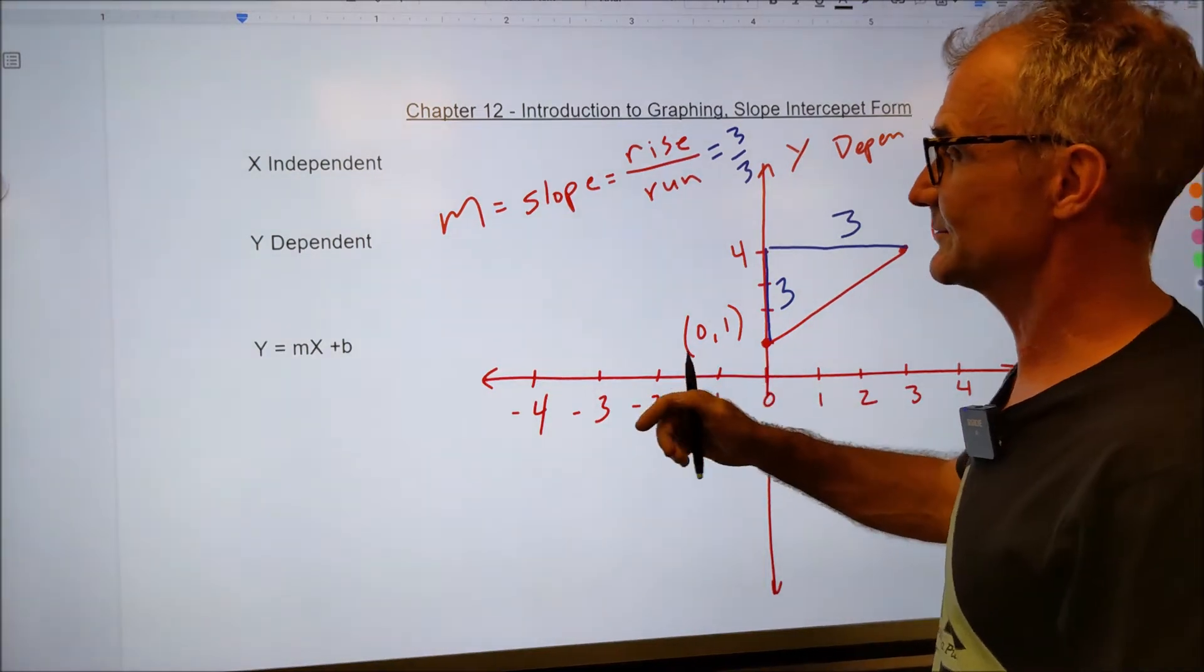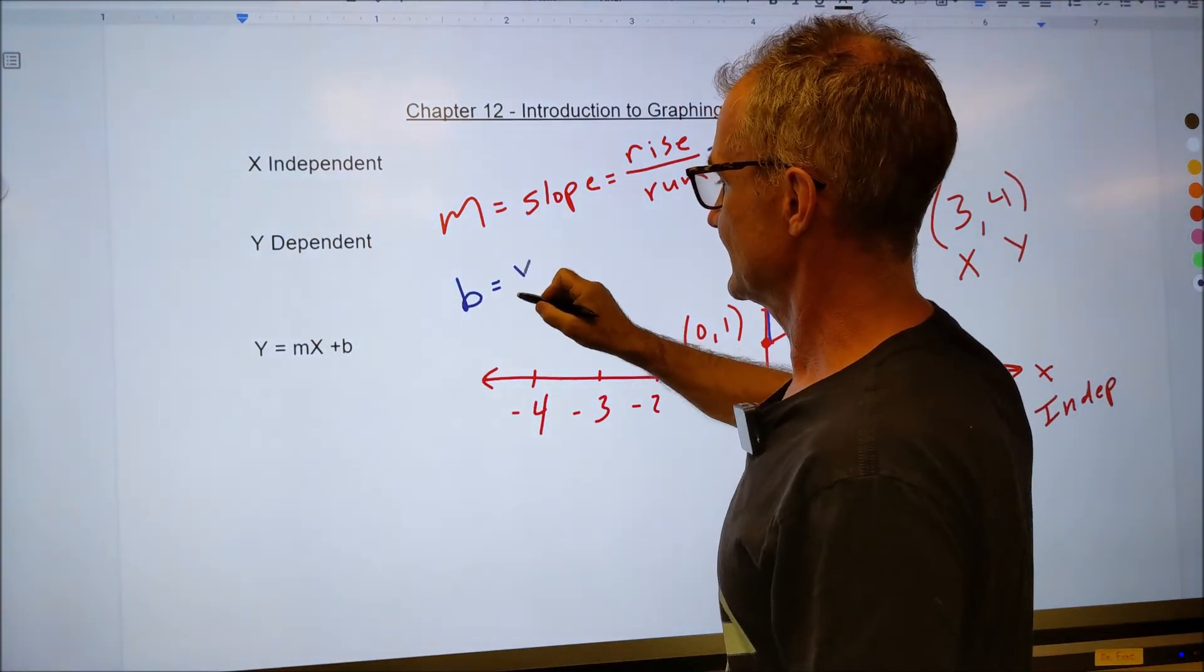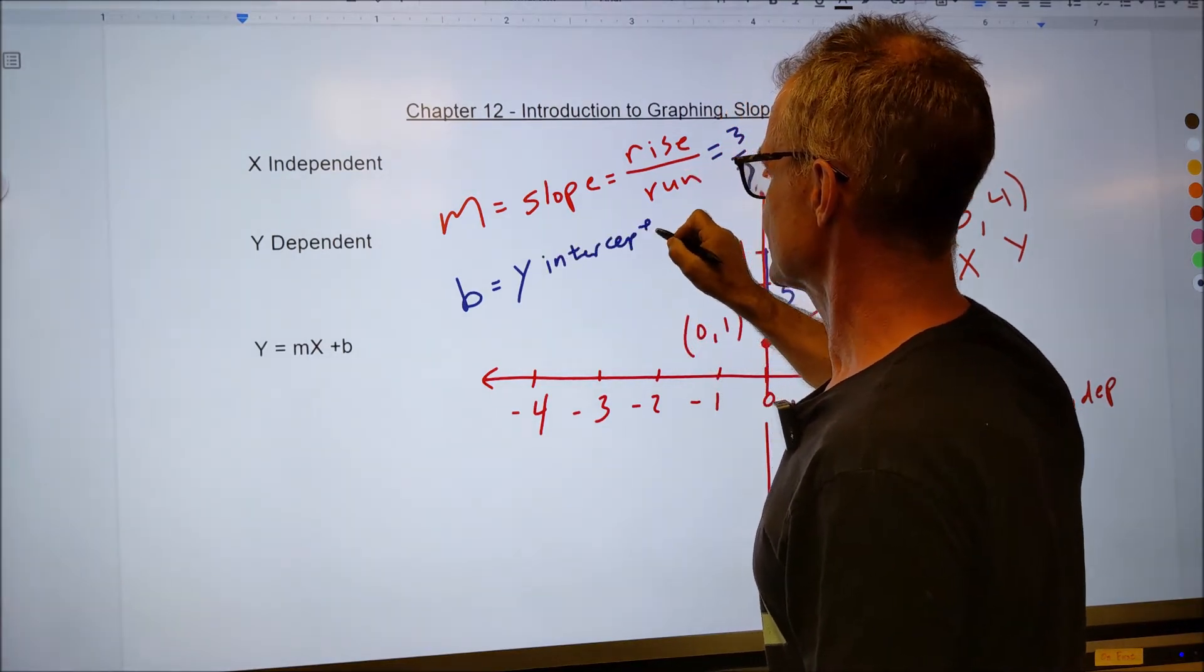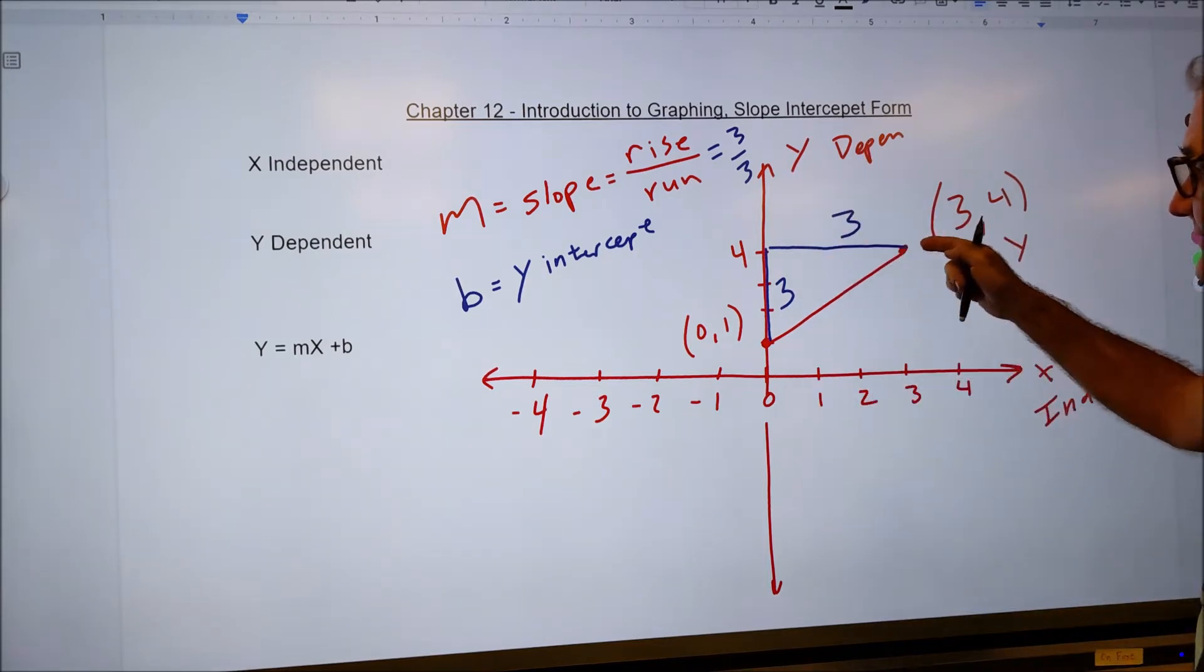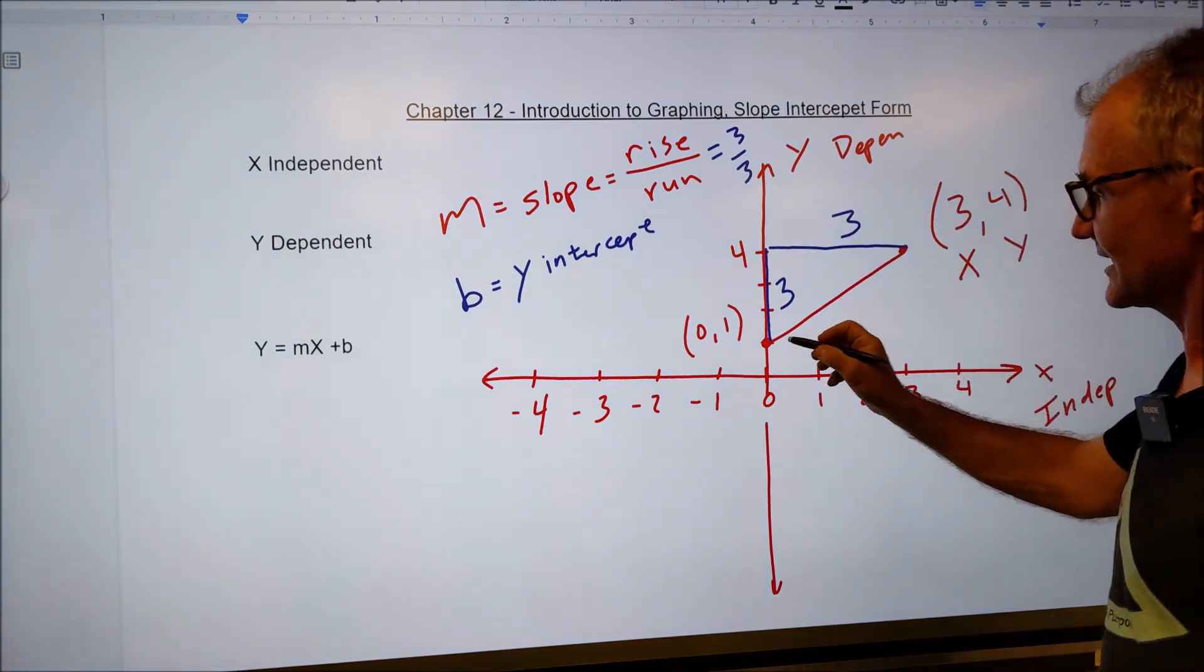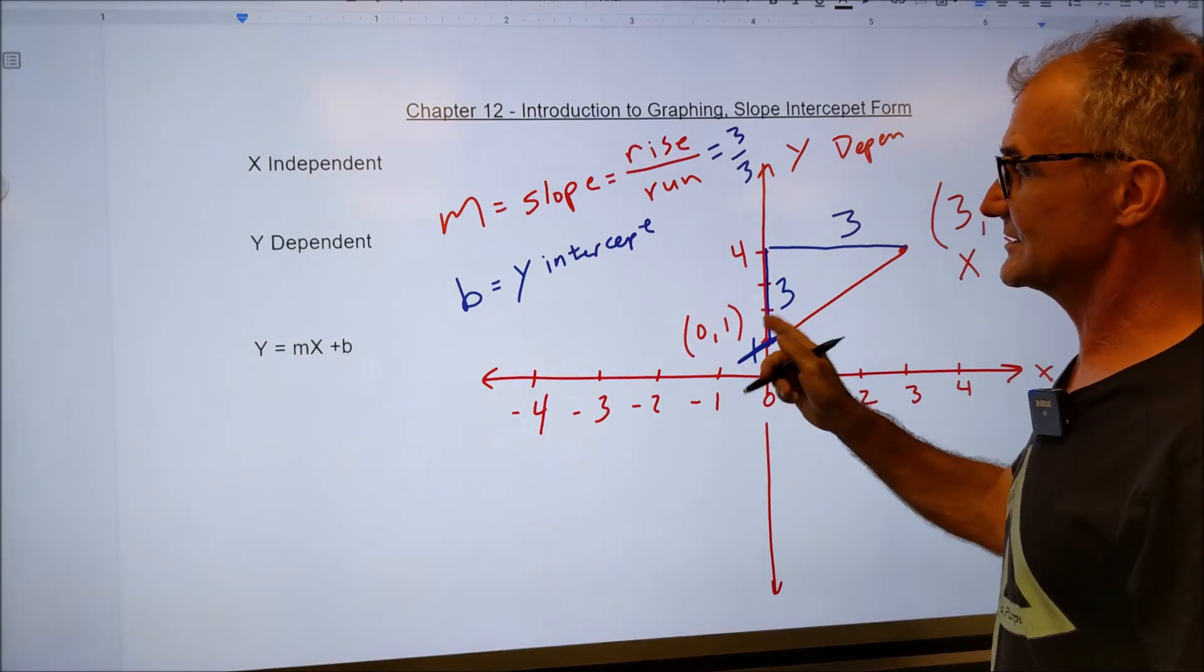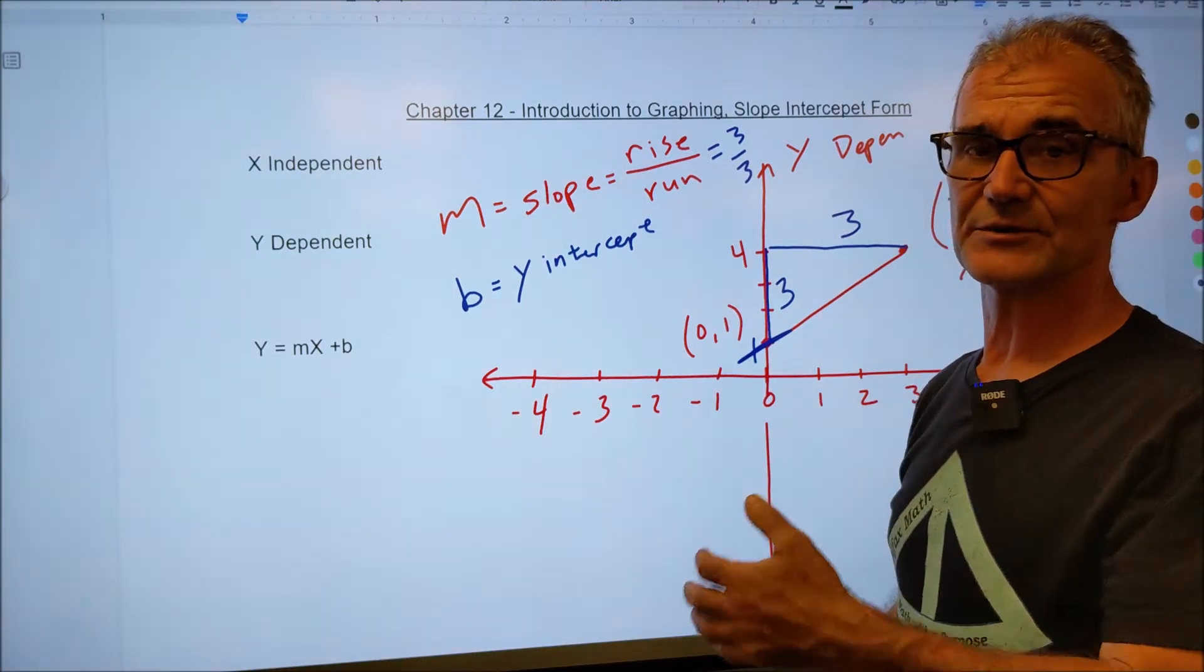If I look at the y-intercept, usually represented with the letter b, that's where it's going to cross the y-axis. So in this line right here, it crosses the y-axis at one as well. So this line that I have drawn, you could put into slope-intercept form.